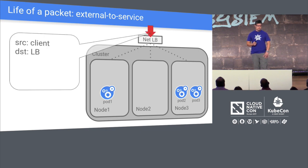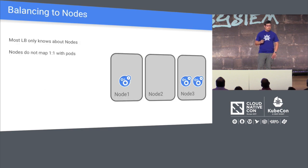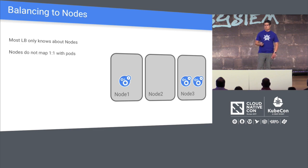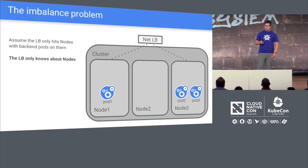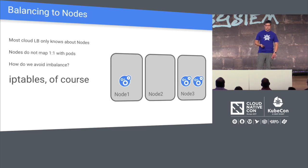External to service: the source packet comes from a client on the Internet, hits the load balancer, which chooses a node. But most load balancers only know about nodes — they're not pod-aware or container-aware, and nodes don't map one-to-one with pods. This creates an imbalance problem: 50% of traffic hits one node and 50% hits another, meaning the pods on node three only get a quarter of the traffic, not half.